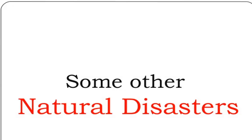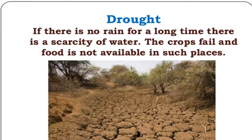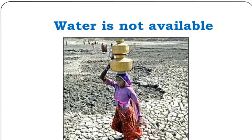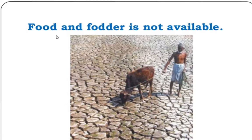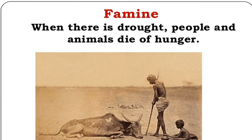Now some other natural disasters are covered in your textbook. The first is drought — if there is less rainfall, there is a scarcity of water, and that disaster is known as drought. If there is no rain for a long time, crops fail and food is not available. Due to drought, water, food, and fodder are not available, which can lead to another disaster called famine, where people and animals are dying due to hunger.